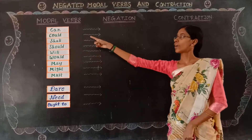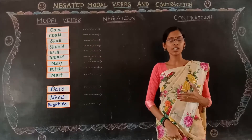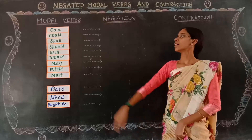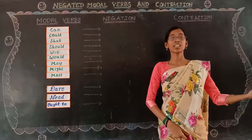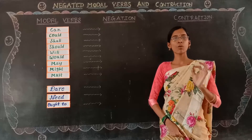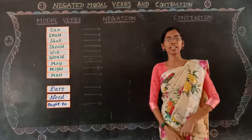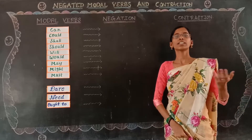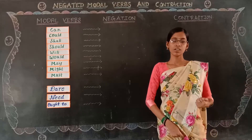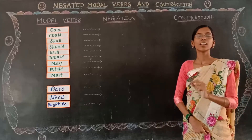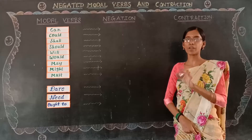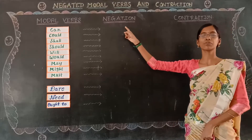Why is it necessary? For example, take the first word: 'can.' We can use 'can' for possibility, suggestion, ability, etc. In positive form we say 'I can lift 10 kilograms of weight.' Whereas if you are given more than 10 kilograms, you can't lift it — so you say 'I cannot lift more than 10 kilograms of weight.' Here, 'cannot' is the negative or negation form of modal verbs.